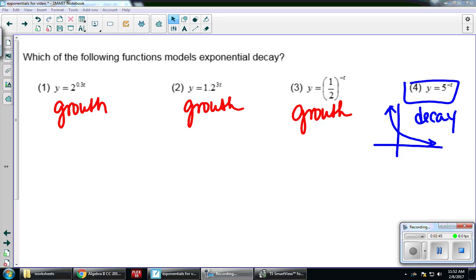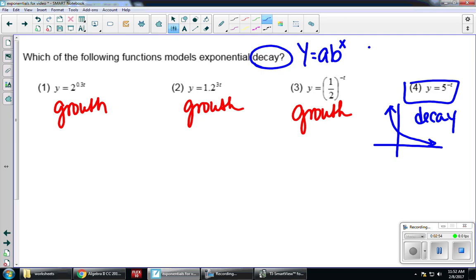We've already answered the question graphically, but I want to take a look algebraically because we know that for decay, if I have y equals ab to the x, b needs to be between 0 and 1. But if I take a look at number 4 it has a 5. Well there's a little bit of a trick happening here. It has a 5 but it also doesn't just have an x in the exponent, there's a coefficient. So we're going to look at each one of these in terms of ab to the x, so I need to separate my exponents.